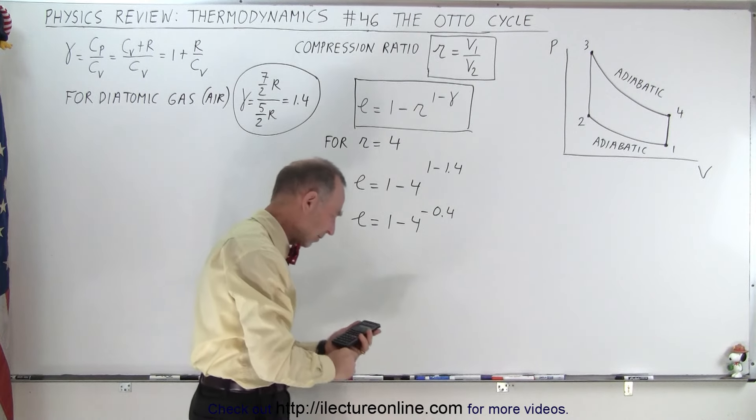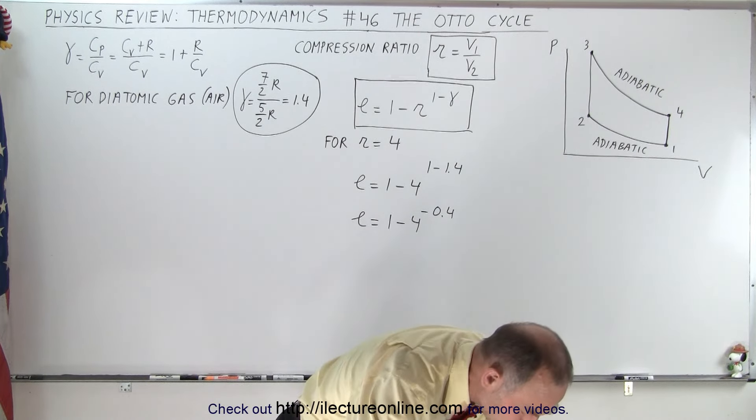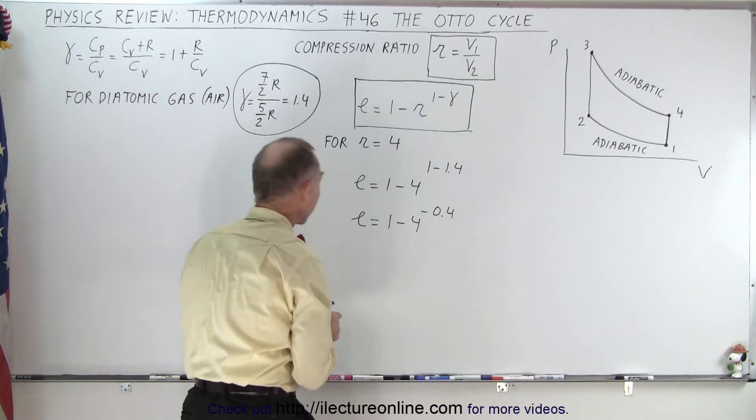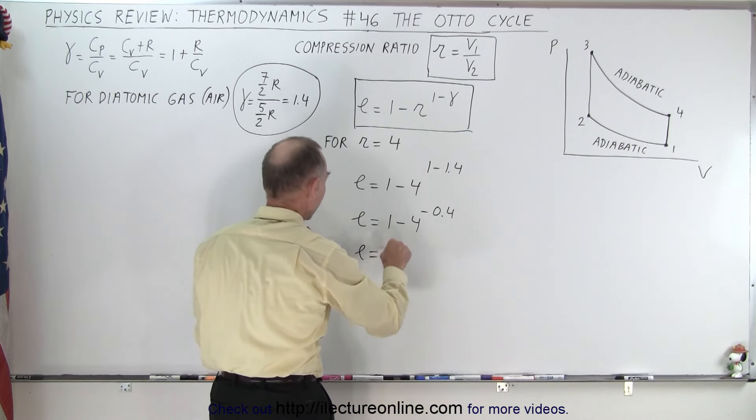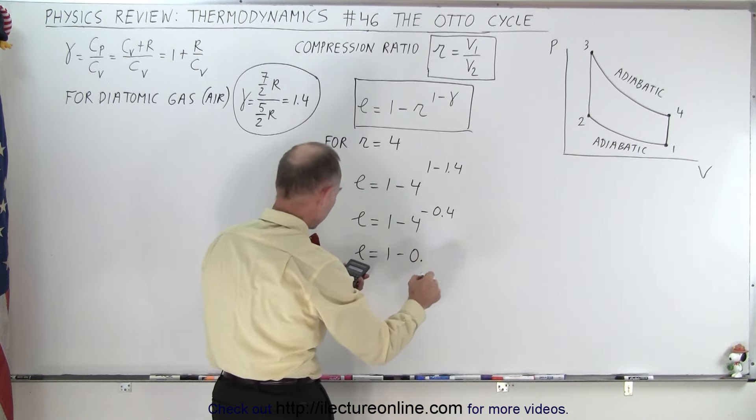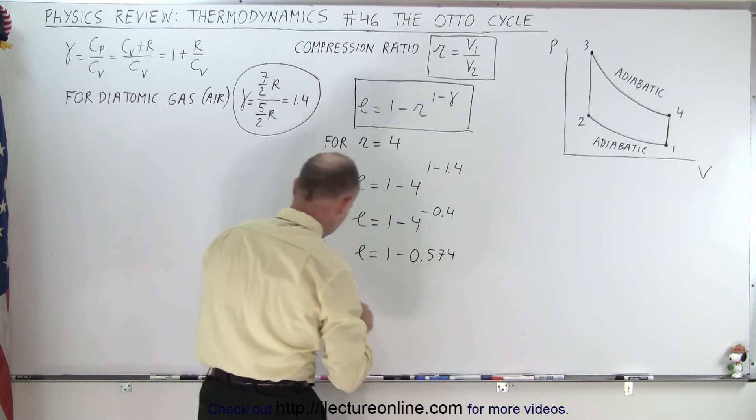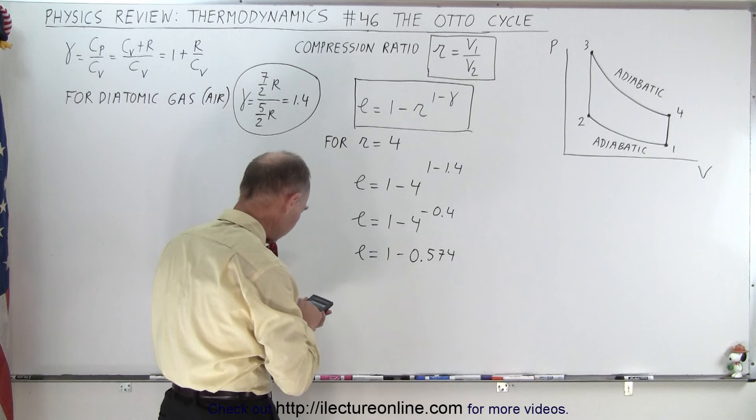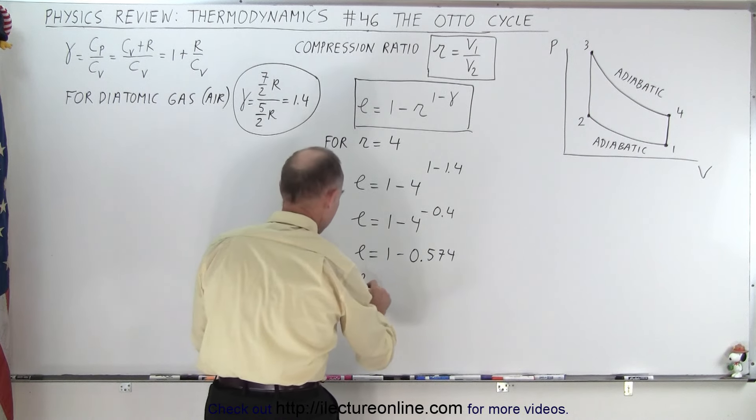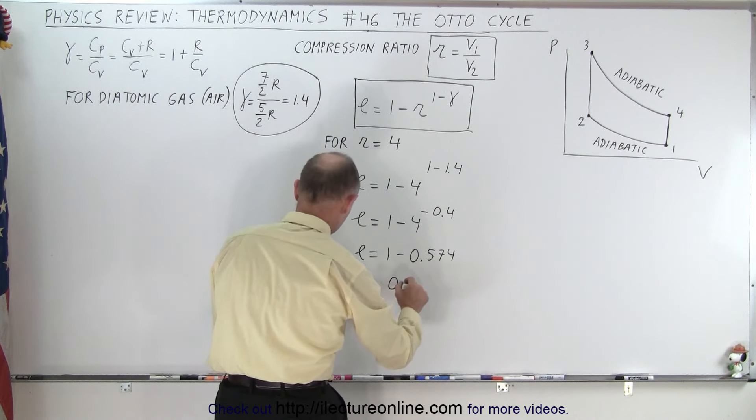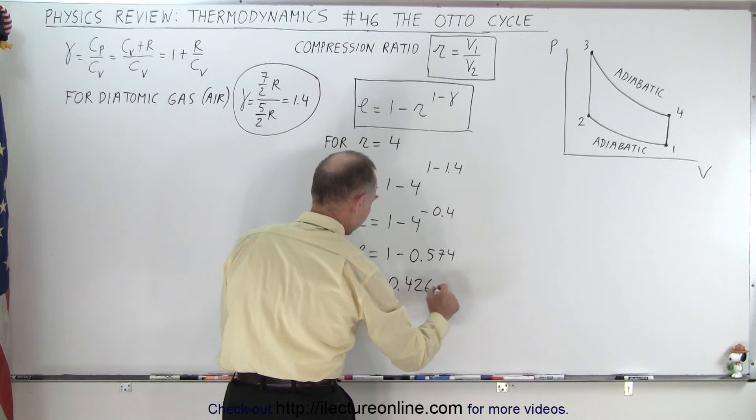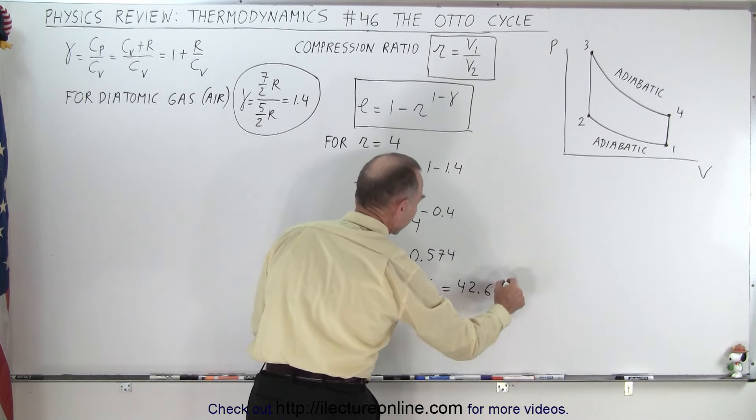So let me just write the intermediate value down. Okay, so that becomes e is equal to 1 minus 0.574. And so minus plus 1, and we end up with e is equal to 0.426, which is 42.6 percent.